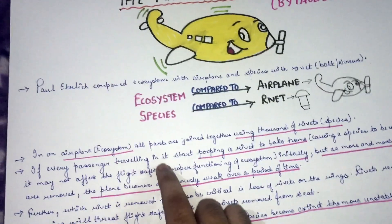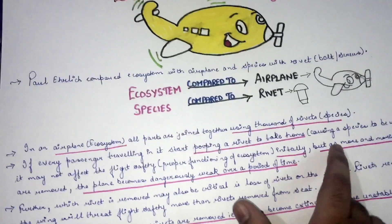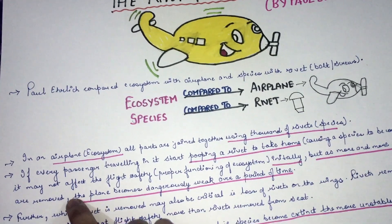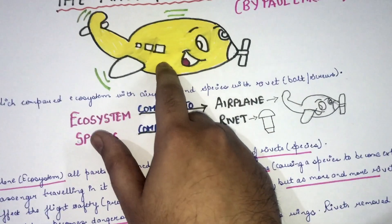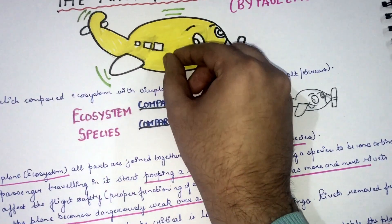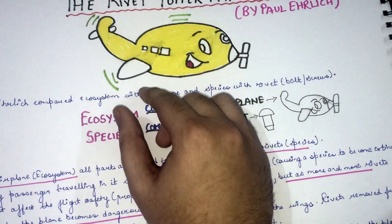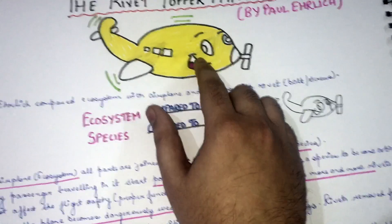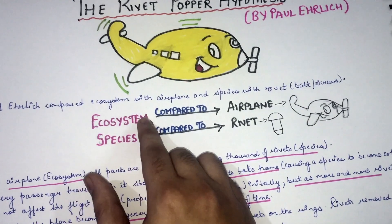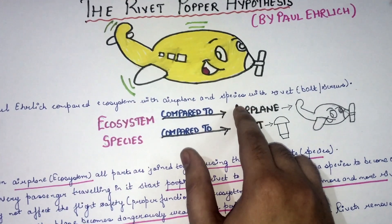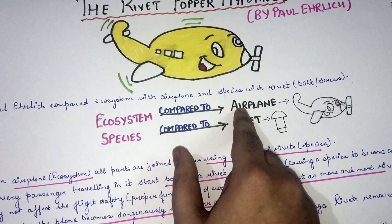If every passenger traveling in the airplane starts popping out a rivet to take home, it may not affect flight safety initially. But as more and more rivets are removed, the plane becomes dangerously weak. Similarly, if species become extinct from an ecosystem, the stability of the ecosystem is affected — because ecosystem is compared to an airplane and species to rivets.